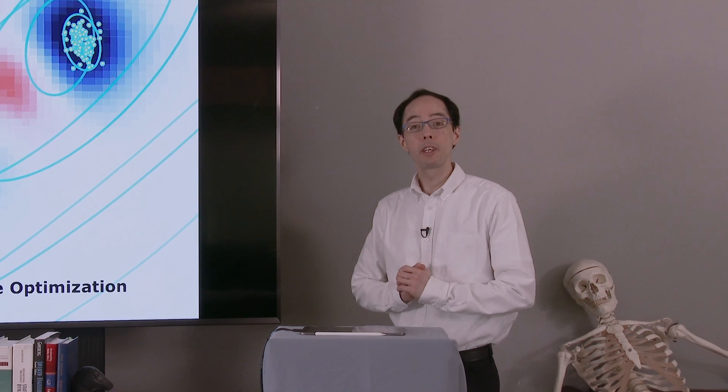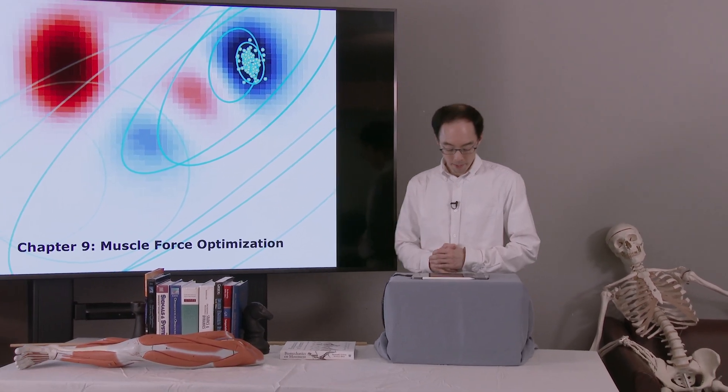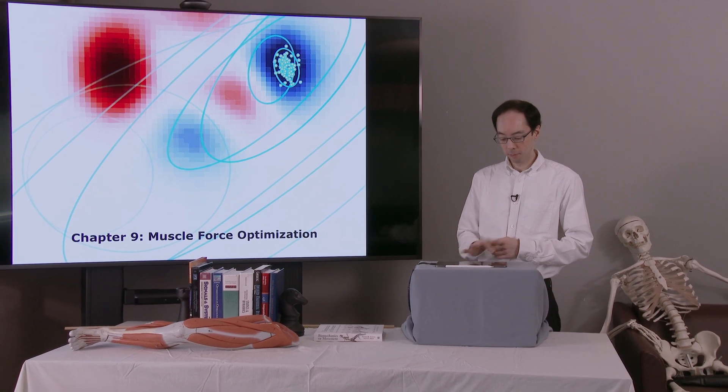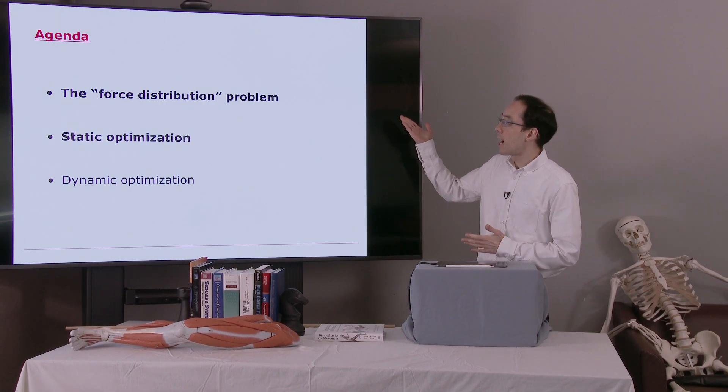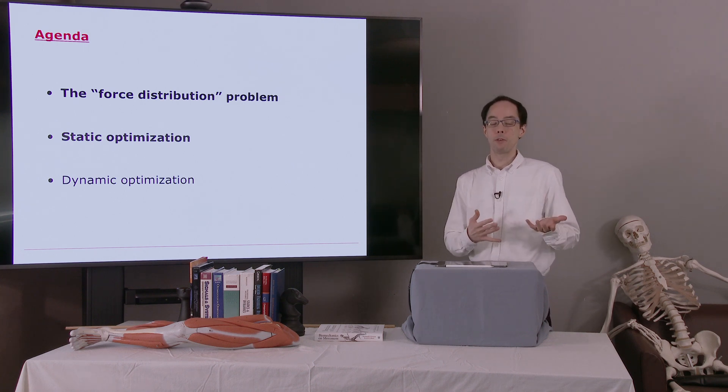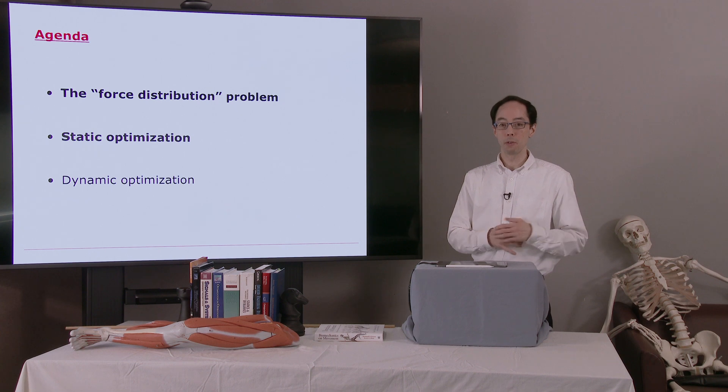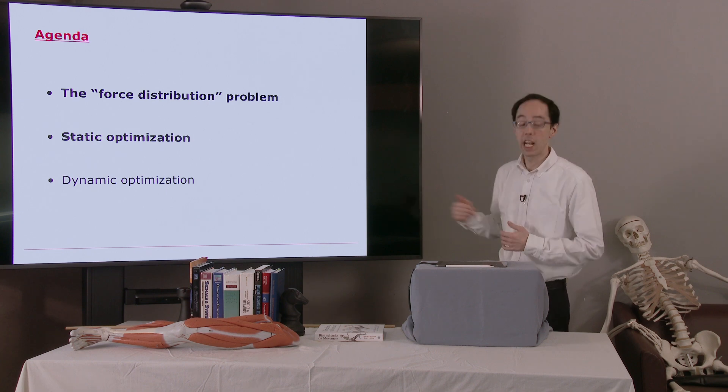Welcome back. So now we're going to look at chapter 9. This is the last chapter in part 3 of the book, Muscle Force Optimization. Here's a quick agenda. We'll look at the force distribution problem. This is sometimes called the muscle force sharing problem or the muscle redundancy problem. We'll see a simple static optimization example. And then in the next video, we'll look at dynamic optimization.